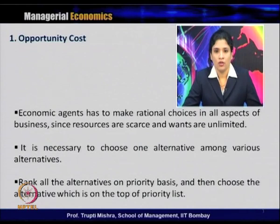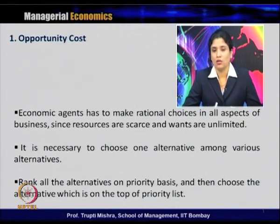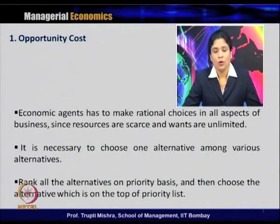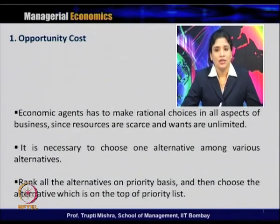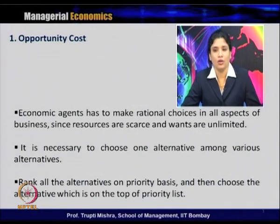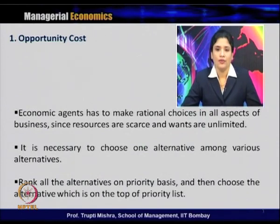In the last class, we discussed that there is always a gap between wants and the resources available to satisfy those wants. Since there is a gap, all economic agents — whether a consumer, producer, investor, or the economy as a whole — have to make a rational choice simply because resources are scarce and wants are unlimited. Since they have to make choices among alternatives, it is necessary to choose one alternative. They rank all alternatives on a priority basis, then choose the one at the top of the priority list.